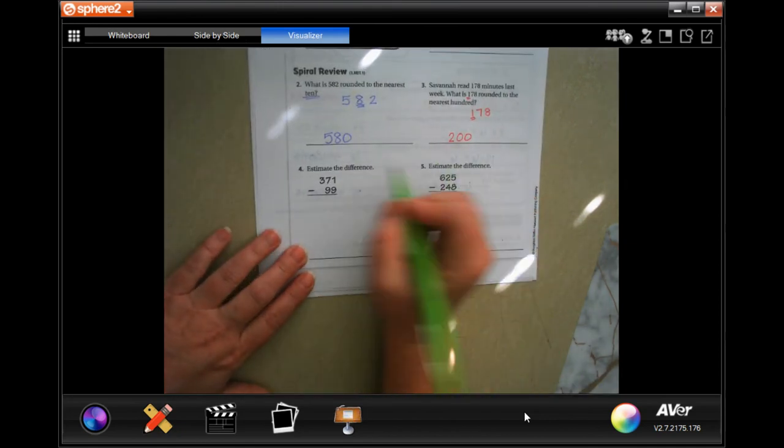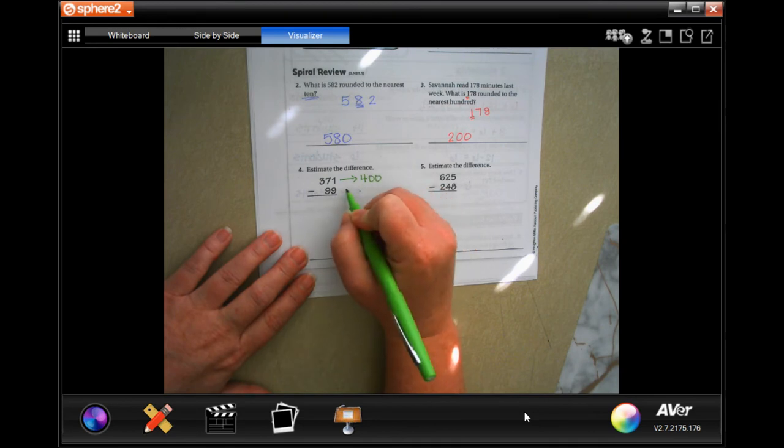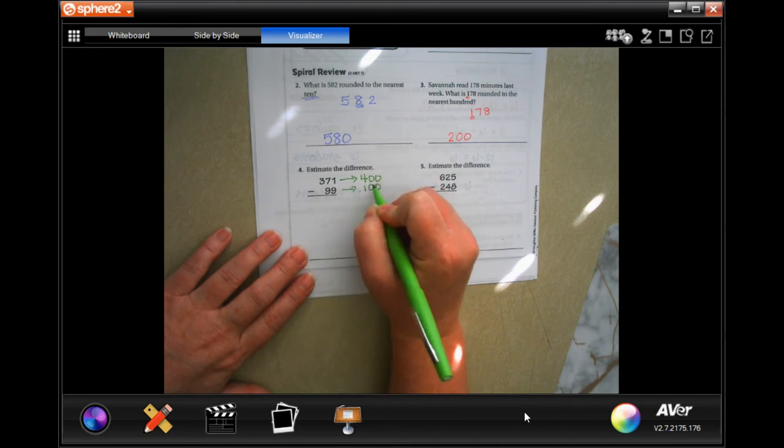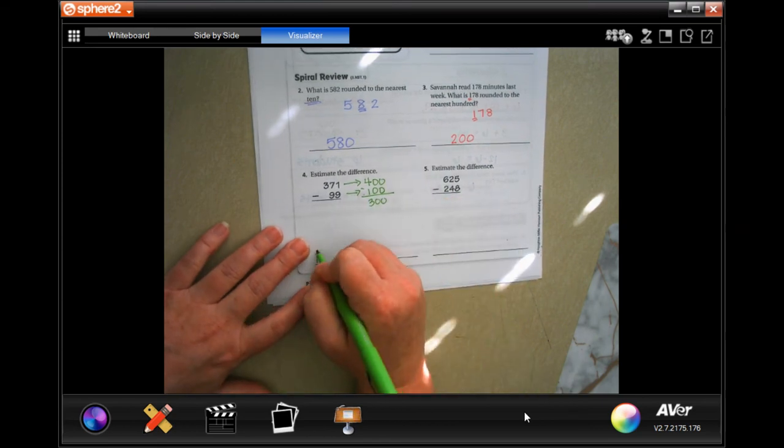Estimate the difference. Well 371 is about 400, 499 is about 500, and we are subtracting and getting 300. So about 300.